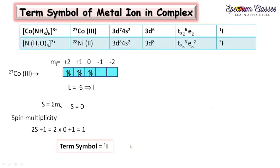Now moving to cobalt and nickel complexes. First, Co(NH₃)₆³⁺: NH₃ is a neutral ligand so cobalt is in the +3 oxidation state. Similarly for the nickel hexa-aqua complex, [Ni(H₂O)₆]²⁺: water is neutral so nickel is in the +2 oxidation state. From here we can easily write their electronic configurations.